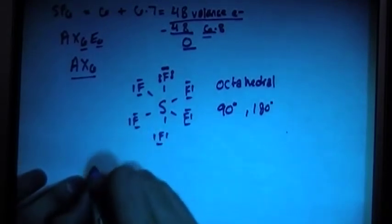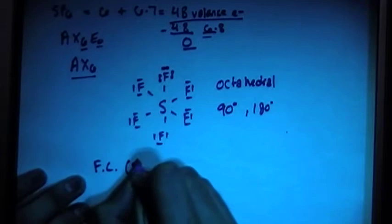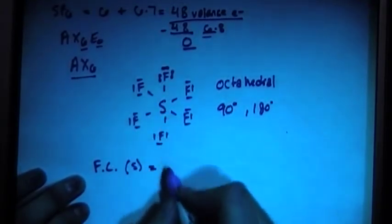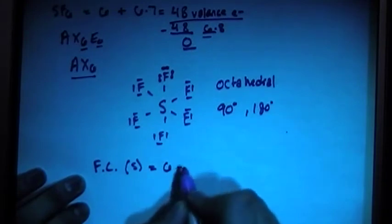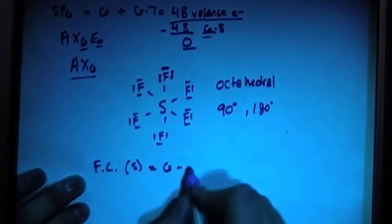And just to check the formal charges, so we have the formal charge of the sulfur in the center. And remember, formal charge is the valence electrons brought in, so that's 6 electrons minus the number of bonds, so there's 1, 2, 3, 4, 5, 6 bonds.